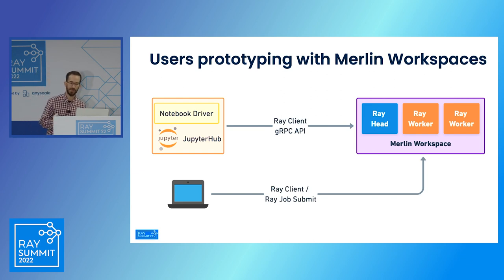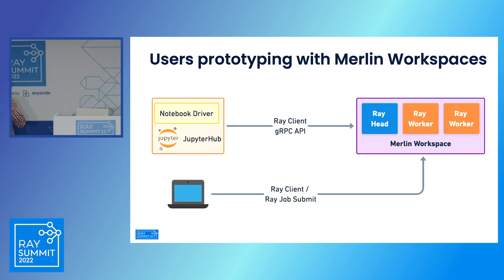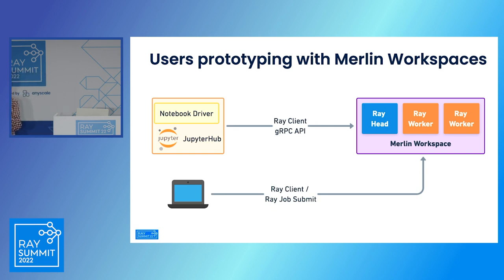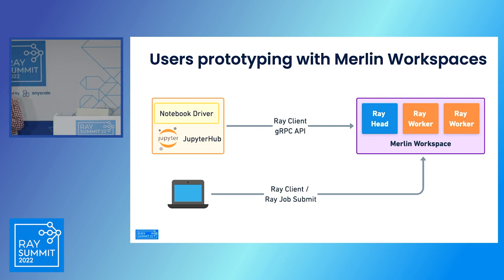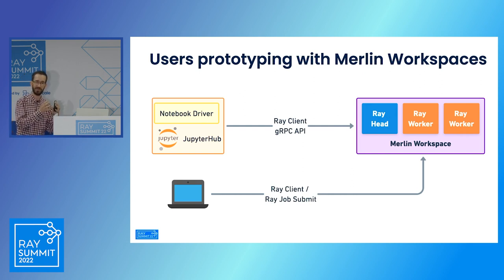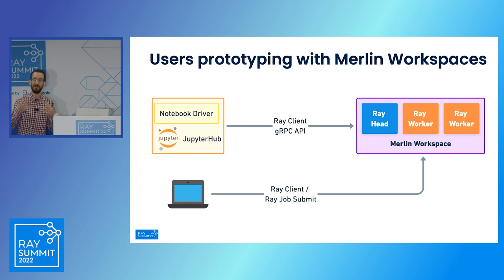Once the workspace is up and running, users can start prototyping in a distributed environment. They have two options: either use Jupyter notebooks from a central JupyterHub, or work from their local machines and use the Ray client or other APIs to send jobs to the remote Ray cluster. From Jupyter notebooks, they can use gRPC with the Ray client API to run different jobs. From their laptop, they can use Ray client or Ray job submit to package code from their local environment and send it to the remote Ray cluster, allowing fast iterations.